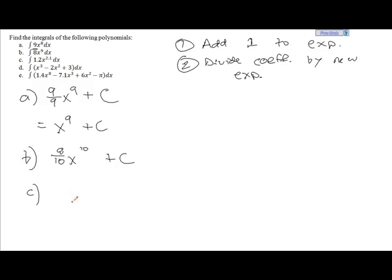Letter c, we're going to add 1 to the exponent, so we'll have, instead of 2.1, we'll have 3.1. To account for that, we take 1.2 divided by 3.1, and add our arbitrary constant.